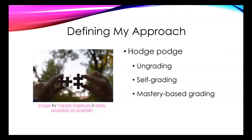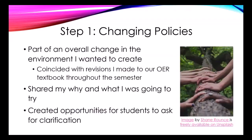If I were to define my approach, I would call it a hodgepodge. There's definitely classic ungrading — there were no points in my class, but there was a lot of self-grading and self-reflection. Students actually proposed their own final grades. And I used mastery-based grading to structure the process so they could see their performance on the different course outcomes and skills. I want to present this as steps so you have an outline of what you might want to do.